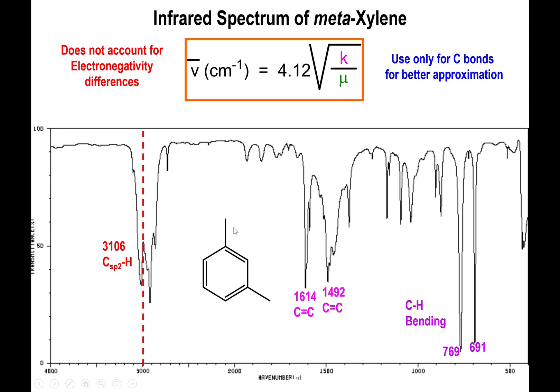Move to meta-xylene or 1,3-dimethyl benzene. Once more you have peaks above 3000, you do have peaks above 1600 and your 1400-1500 region.